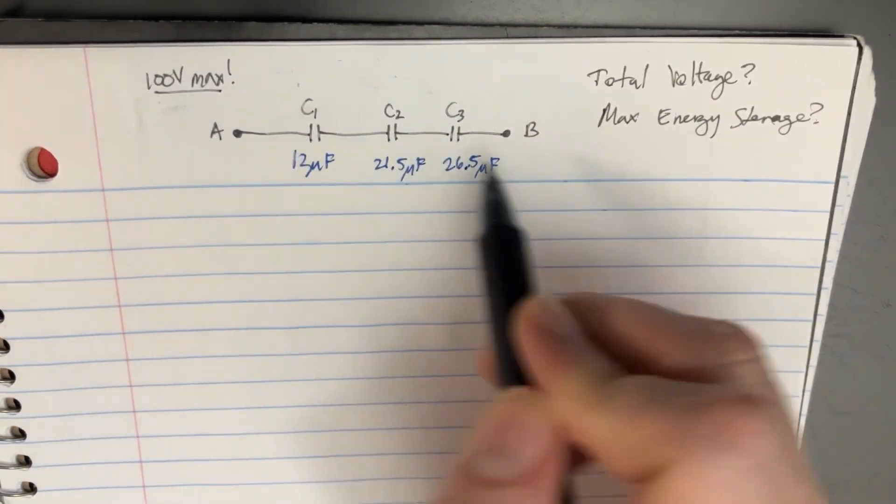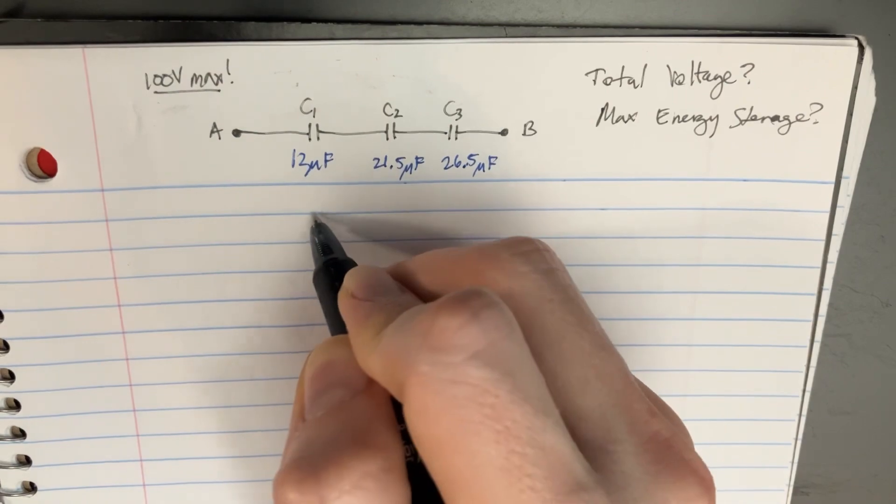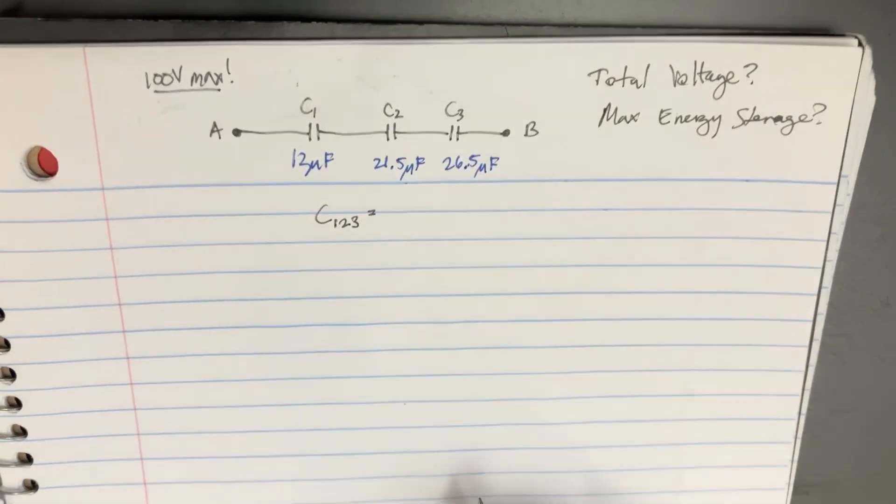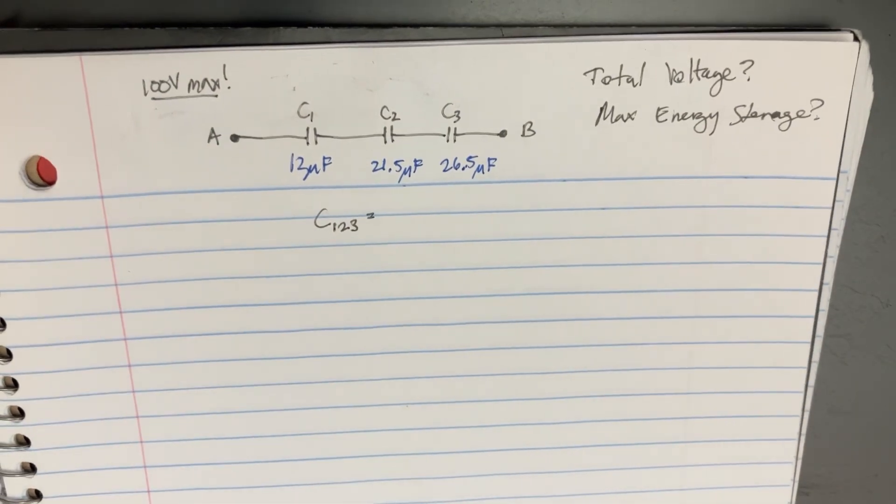So we're going to condense this into one capacitor, C123, and that's going to be added up in series. So we're going to have to do the reciprocal of all those.